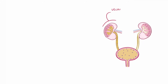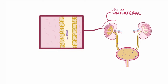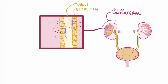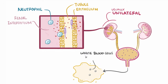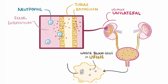Acute pyelonephritis is most often unilateral, meaning it affects just one kidney. When bacteria mount an attack, they usually start by adhering to the renal epithelium of the tubules, which triggers an inflammatory response. Chemokines attract neutrophils to the renal interstitium, but typically the glomeruli and vessels of the kidney are spared. As neutrophils infiltrate and die off, they make their way through the urinary tract and are peed out, so people often have white blood cells in their urine. Sometimes the cells and surrounding inflammatory protein debris are cast into the shape of the tubule, called a white blood cell cast.